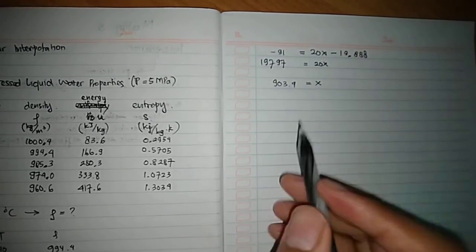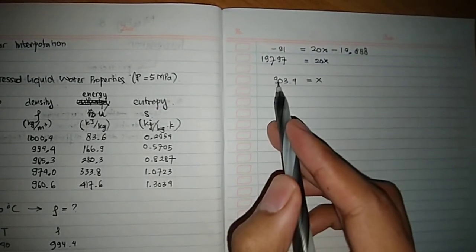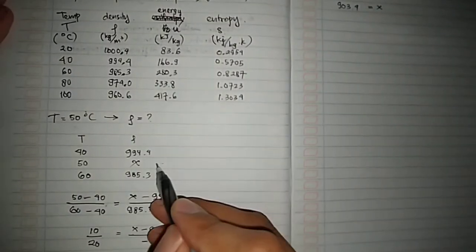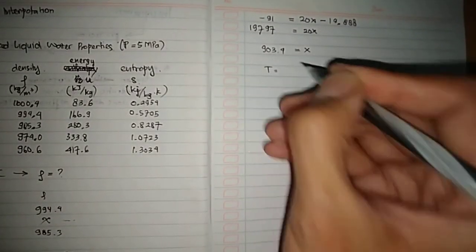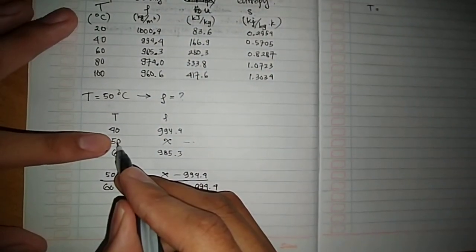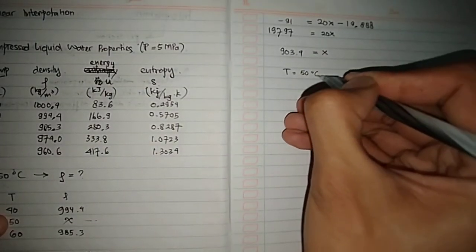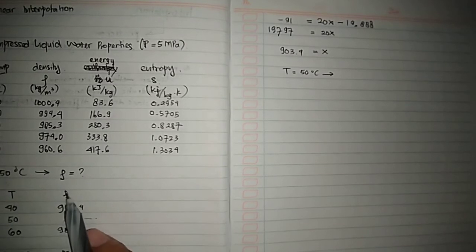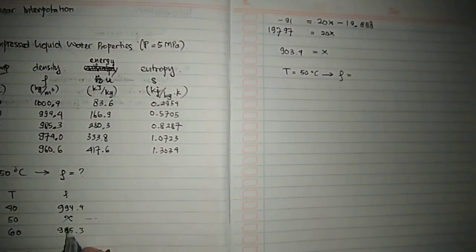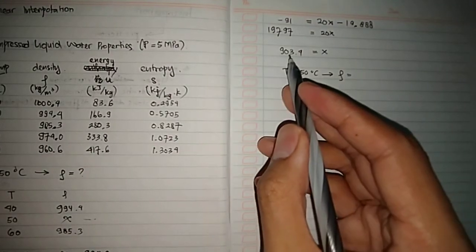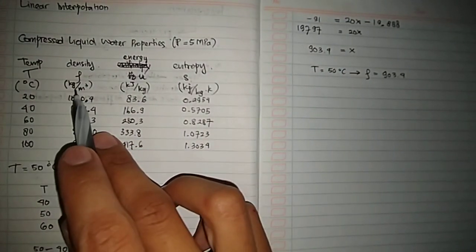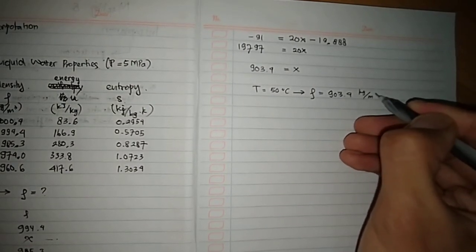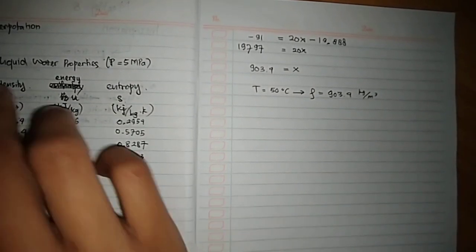Now you get this number. The x is equal to 989.9, so this value will be here. We get the result: for temperature equal to 50, then rho will be equal to x, and the value of x is this. The unit is kilogram per meter cubed. This is for linear interpolation.